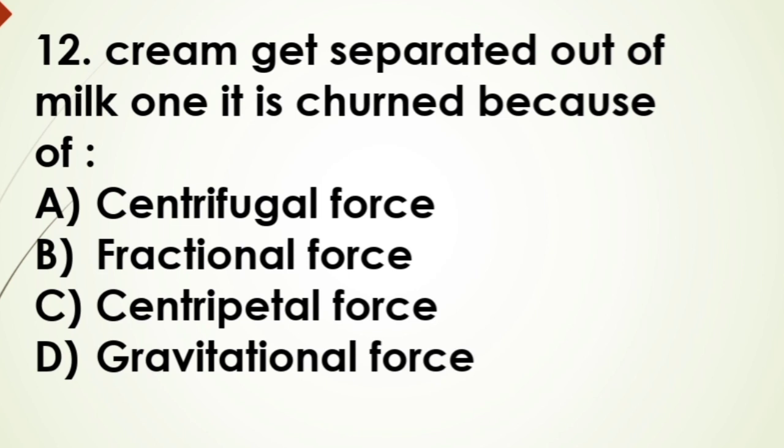And the answer is option A, centrifugal force. Now the 13th question: if the speed of a particle undergoing circular motion is doubled and its radius is halved, then the centripetal force will be - A) increase four times, B) decrease four times, C) increase two times, D) increase eight times.